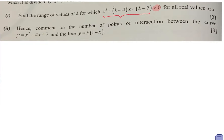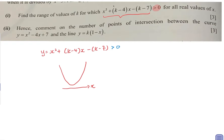If you were to imagine this on the graph, where y equals x squared plus k minus 4x minus k minus 7, it really means that your graph is entirely above the x-axis, because 'more than zero' means y is more than zero.